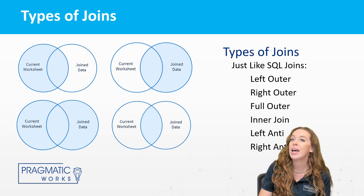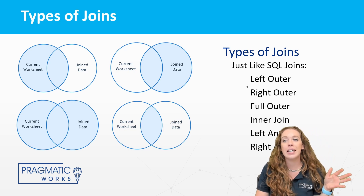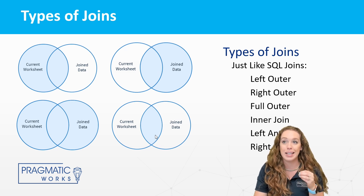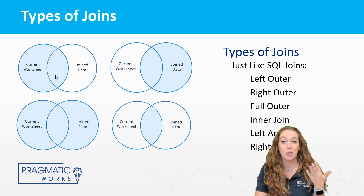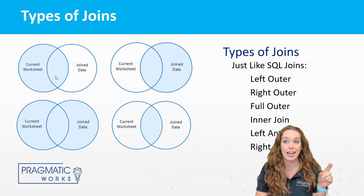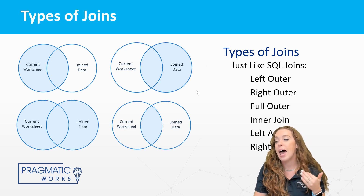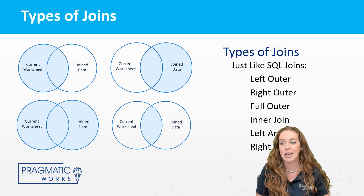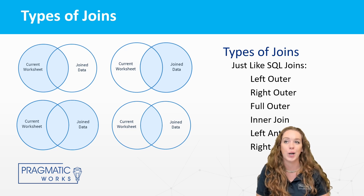And then there are also left anti and right anti. A left outer is probably the most popular because by default that's the first option, so most people go with that. It's really similar to a VLOOKUP. An inner join is what we are going to be doing today, and that is when the content from both tables matches up. So the conditions kind of have to be exact to get that inner join.